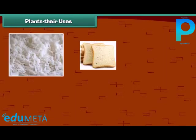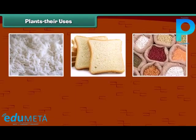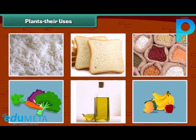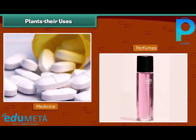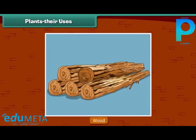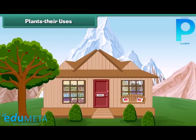Kids, as we know that we get our food items from plants. Besides food items, we also get many other things from plants. Many medicines and perfumes are made from plants. Plants also give us wood. In some places, houses are made up of wood.